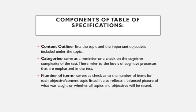There are different components of a table of specifications. We have the content outline, which lists the topic and the important objectives included under the topic; the categories, which serve as a reminder or a check on the cognitive complexity of the test. These refer to the levels of cognitive processes that are emphasized in the test, the number of items for each objective or content. It also reflects a balanced picture of what was taught — whether all topics and objectives will be tested.